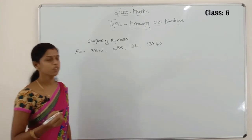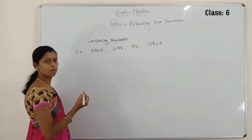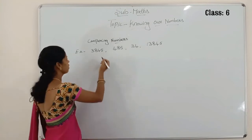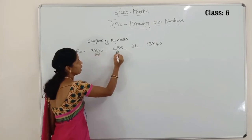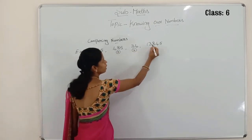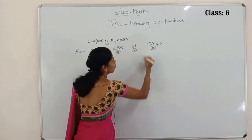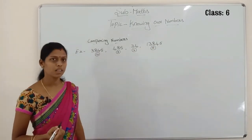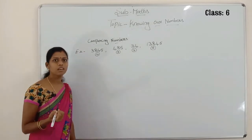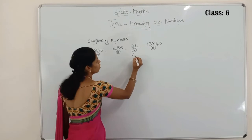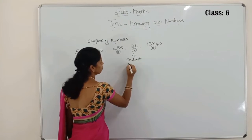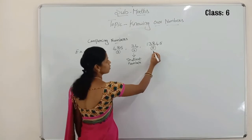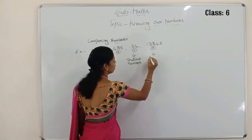See children, I wrote some numbers on the board. First you have to count the numbers — how many digits are there? We have a 4-digit number, a 3-digit number, a 2-digit number and a 5-digit number. Which is the greatest number and which is the smallest? We have only a 2-digit number — it is the smallest. The 5-digit number is called the greatest number.